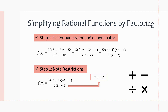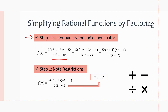Let's move on to simplifying rational functions by factoring. Step one: we want to factor the numerator and denominator, which makes it easy to divide out common factors, find restrictions, and locate holes and asymptotes. For example, the numerator 20t³ + 15t² − 5t can be factored by taking out 5t, then factoring the trinomial, giving 5t(t + 1)(4t − 1). The denominator 5t² − 10t factors to 5t(t − 2).